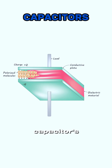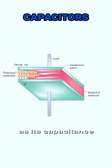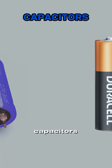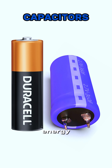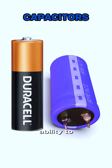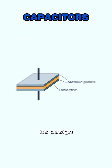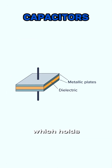We know the capacitor's ability to store charges as its capacitance. Capacitors function a lot like rechargeable batteries, but a capacitor and a battery differ in how they store energy. Unlike batteries, a capacitor's ability to store energy doesn't come from chemical reactions — it comes from its design, which holds negative and positive charges apart.